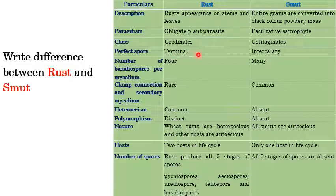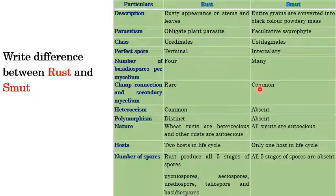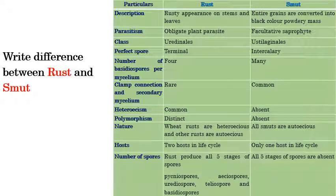For perfect spores: in rust, spores are produced terminally, whereas in smut they are produced intercalarily. Rust produces 4 basidiospores per mycelium, whereas smut produces many. Clamp connections and secondary mycelium are rare in rust but very common in smut. Heteroecism is common in rust but absent in smut. Polymorphism is distinct in rust — the same uredospore converts into teliospore, then basidium, then spermatia, then aecia — whereas polymorphism is absent in smut.